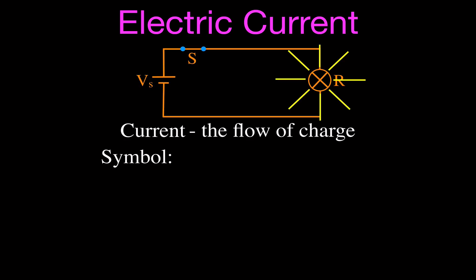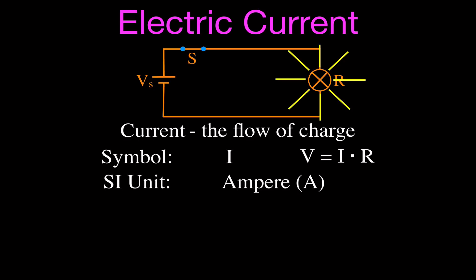The symbol for current used in equations is I, as in V equals I times R — Ohm's law, where voltage equals I, the current, times R, the resistance. The unit for current is the ampere. Sometimes people just say amps, but really it's the ampere, and it has the symbol A.